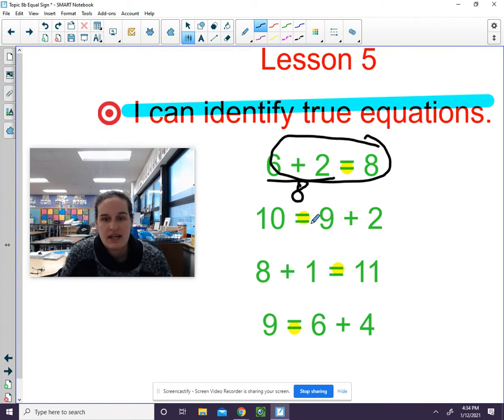Next one. Ten equals nine plus two. I need to do the adding part first. So what should I add together? The nine plus two. What's nine plus two? Eleven. Now I will look at my sentence again. Does ten equal eleven? No. Cross it off.